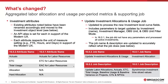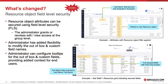Last but not least, the resource object has now been introduced into the field-level security capability. As with other objects that are part of field-level security, the administrator grants or revokes edit and view access at the group level. In addition, administrators have the added flexibility to modify out-of-the-box or custom attribute names, and a new piece available in this release is configuring tooltips for both out-of-the-box and custom fields, providing added context for end users. The tooltip capability will be covered in another section but will be shown here in the context of resource management.